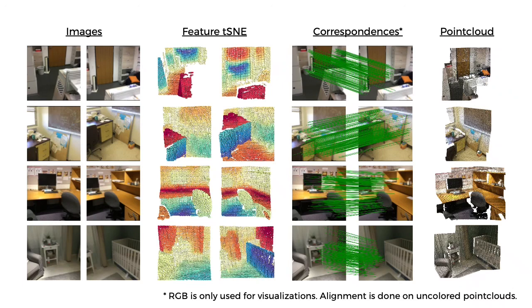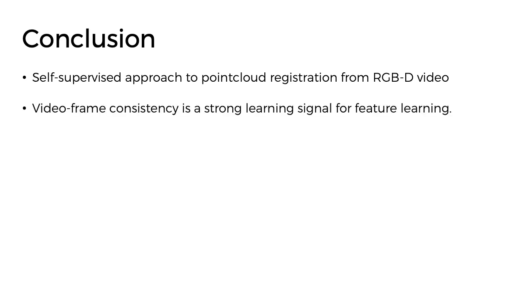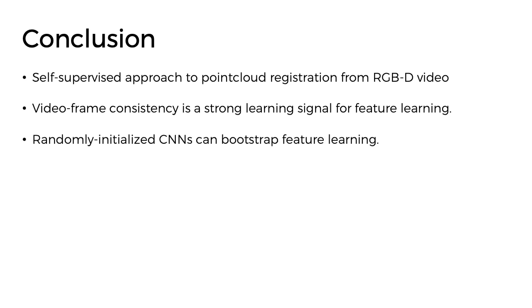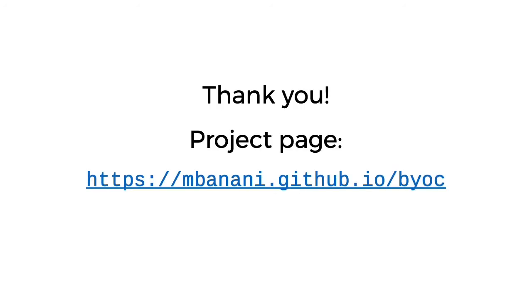In conclusion, we propose a self-supervised approach to point cloud registration that trains on only RGBD video. We find that video frame consistency is a strong learning signal for feature learning. We also find that randomly initialized CNNs provide enough signal to bootstrap feature learning, and that the ratio test is surprisingly effective for correspondence estimation and feature learning. This eliminates the need for an inlier prediction network and makes the overall setup much simpler. Thank you for your attention, and please visit our project page for more information.